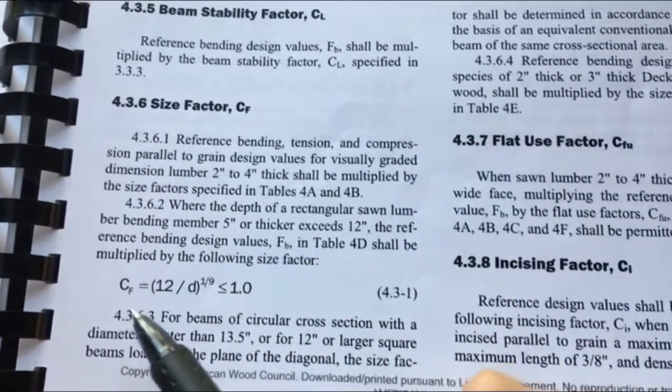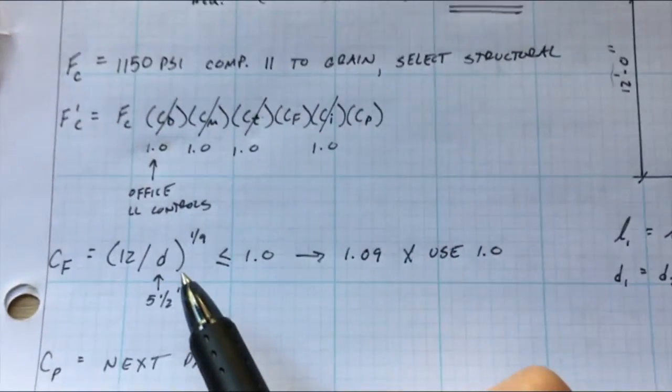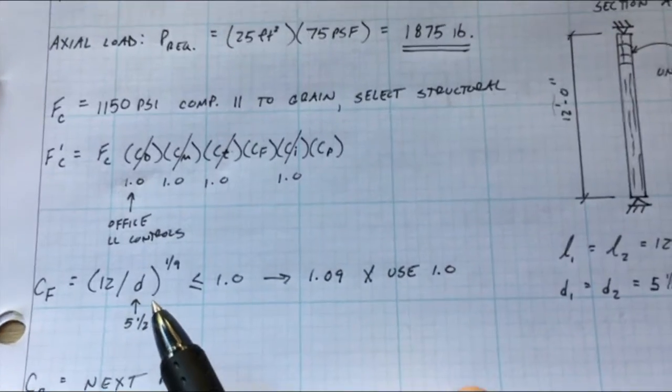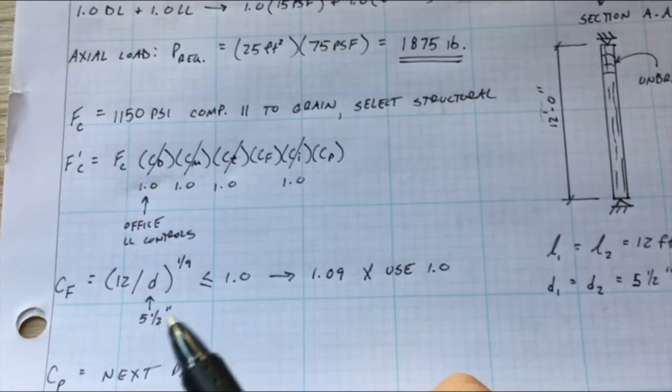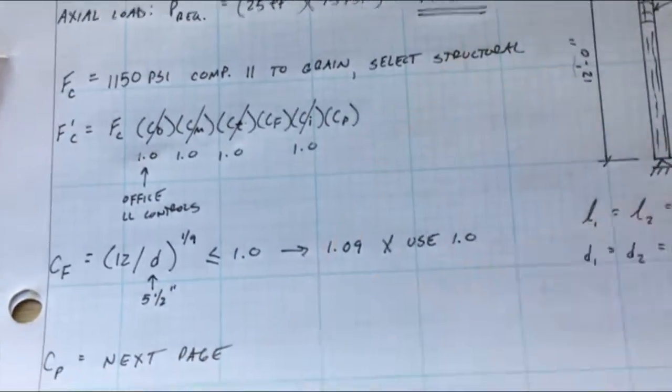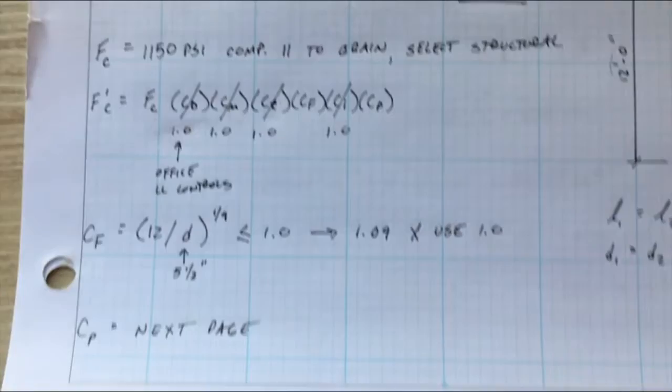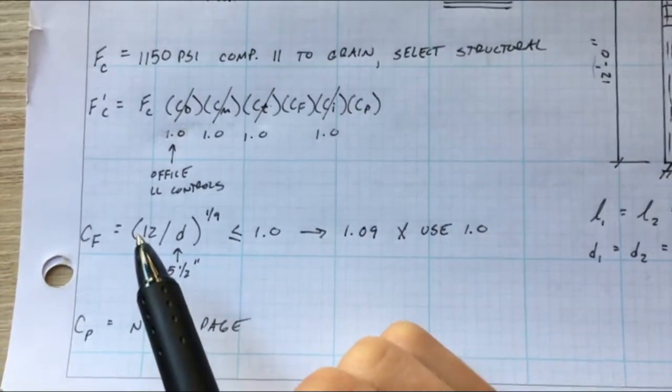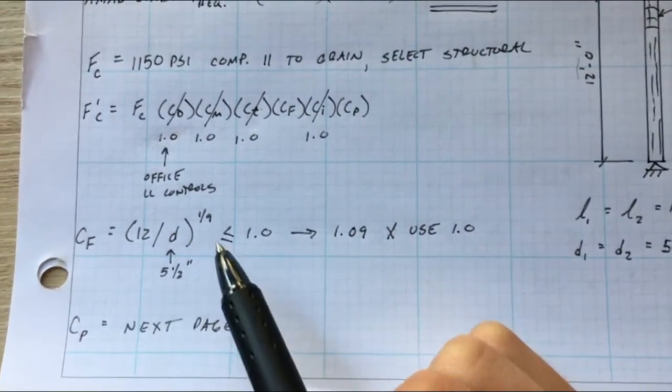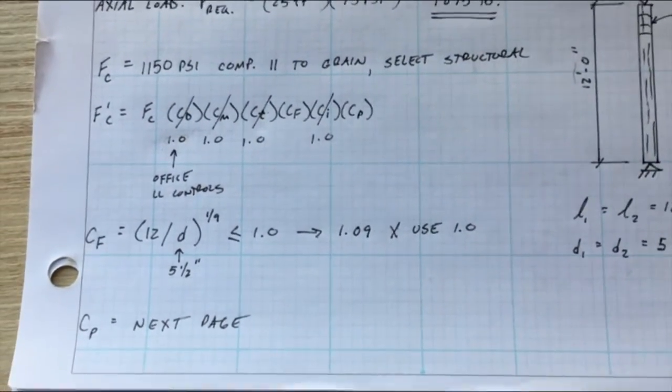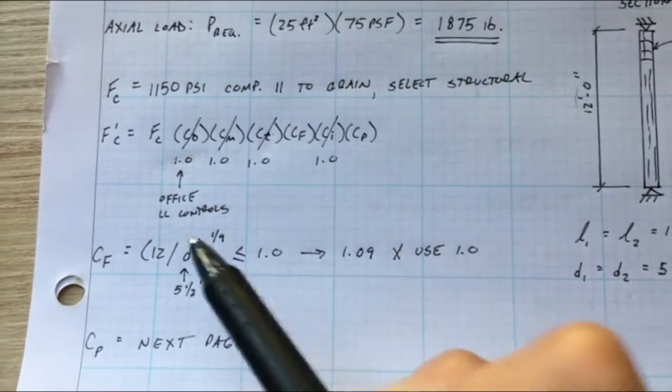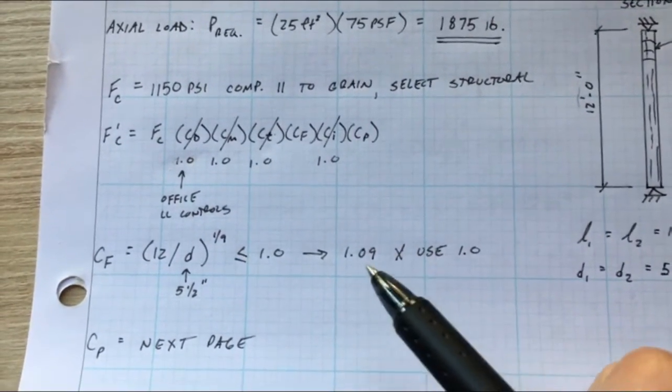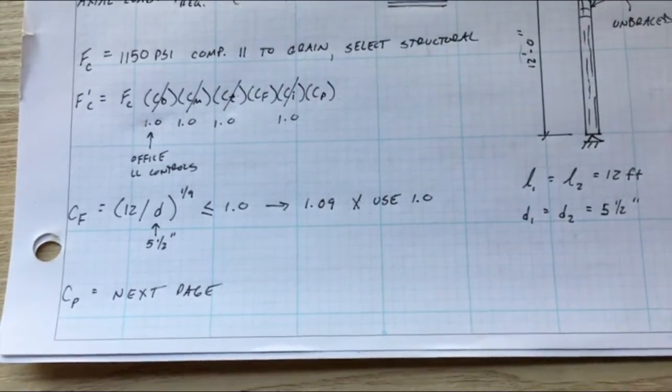So we have 1.0 for everything except for CF and CP. Well CF is easy, that is in 4.3.6 and it's just defined by this equation. So we're going to plug in our d. We know nominal column is six by six that we're using but the actual dimension is a five and a half by five and a half. So we plug in five and a half for our d and we just plug it into the equation and we know it needs to be less than or equal to 1.0, that's part of the equation. That comes out to 1.09 so you just use 1.0. So CF 1.0 good. CP is the harder one, we're going to go to the next page here.